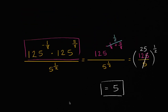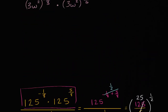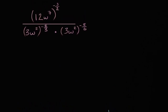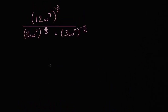Let's do another one. This one is more interesting because we are starting to involve a variable — we have the variable w. But it's really going to be somewhat the same process. Here the thing that jumps out at me is the denominator. I have the same base, 3w squared, raised to one exponent, times the same base 3w squared raised to another power.